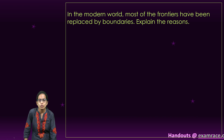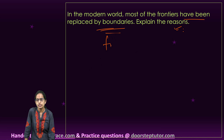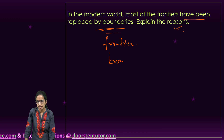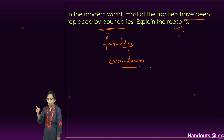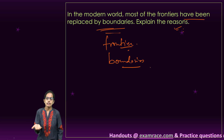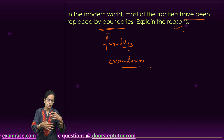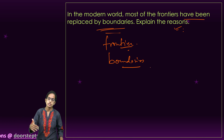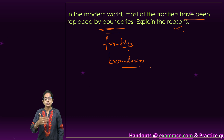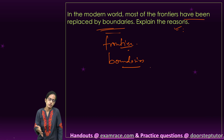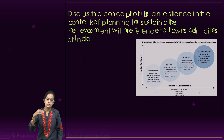The next question is: in the modern world, most frontiers have been replaced by boundaries — explain the reasons. Here we need to first explain what frontiers and boundaries are. Boundaries are the point of conflict of interest, so most frontiers are now being replaced by boundaries. A frontier is a physical and moral concept, whereas boundaries are a geographical, physical limit to the sovereignty of a region. Most of the world is now switching towards boundaries due to ethnic differences, religious differences, cultural differences, and the proportion of land division.